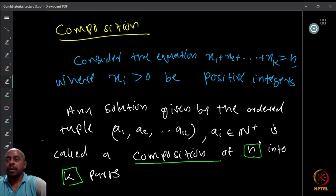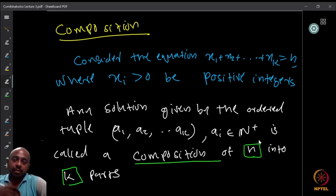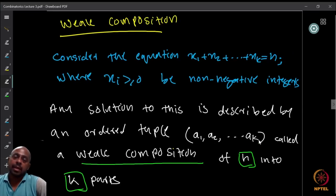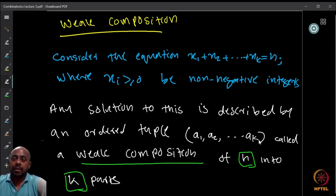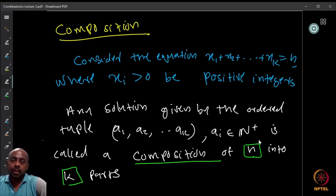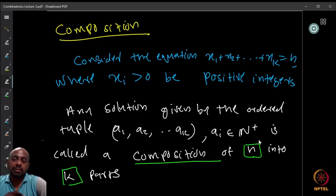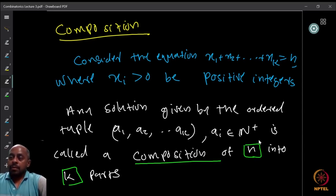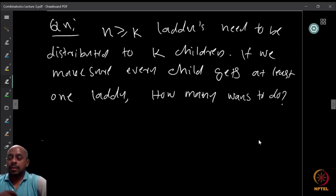Can you think of any argument to count the number of compositions or weak compositions? Both of these can be solved using results we already looked at. Maybe you should pause this video and spend some time trying to figure out how to count these two things — it will be very useful if you spend some time thinking about this instead of looking at the solution presented here.